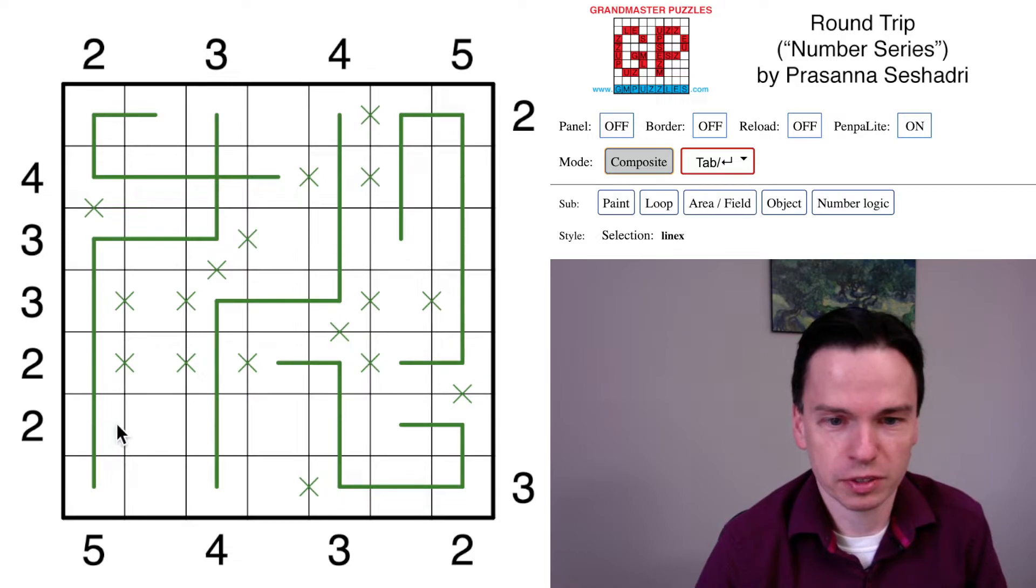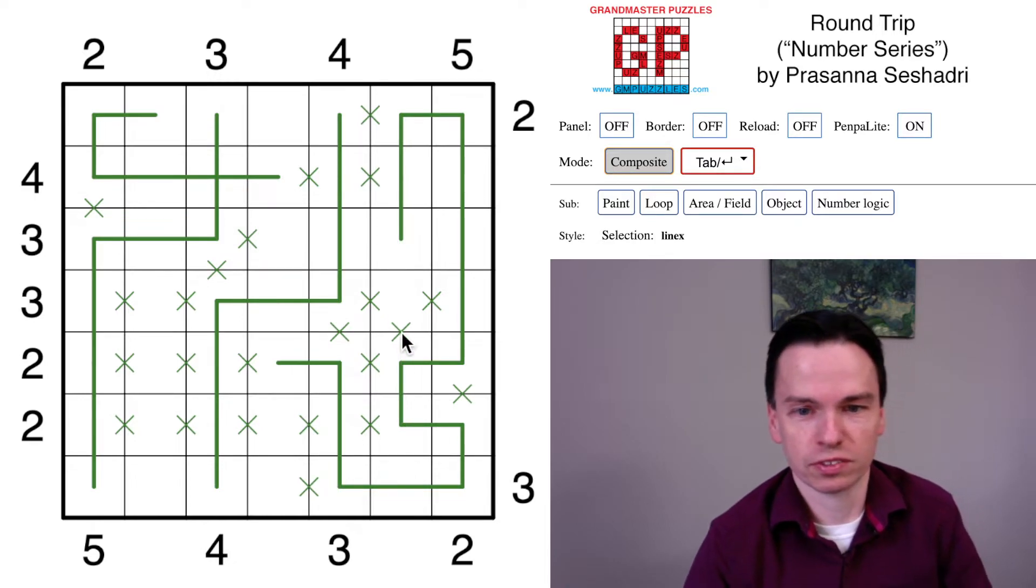This row near the bottom can't have a turn here, here, or here. If it crossed over here it would be too long, so the only place to get a 2 long is coming through this group.